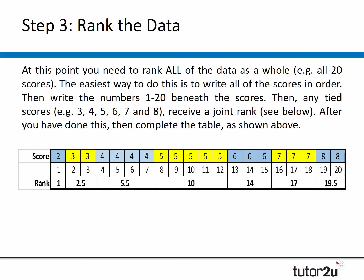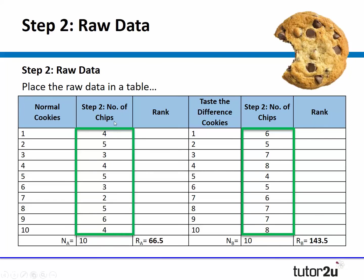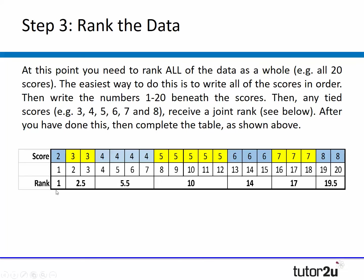In step three, you want students to rank all of their scores. Write them all out in order from lowest to highest, then rank them from one to 20. Any scores that are the same must be given a joint rank — an average. For example, two threes both get a rank of 2.5; four fours all get a rank of 5.5. It's easier for students to write all numbers in order first rather than trying to do it straight into the table.